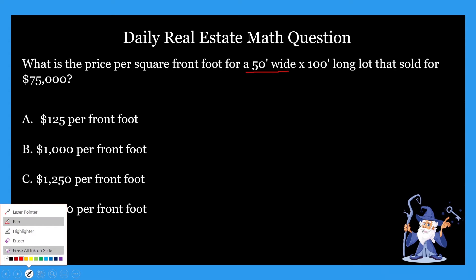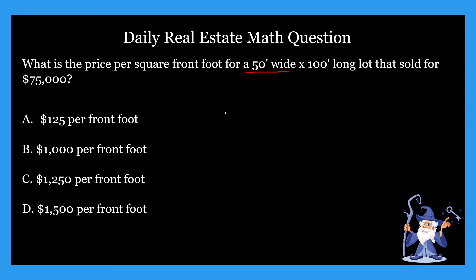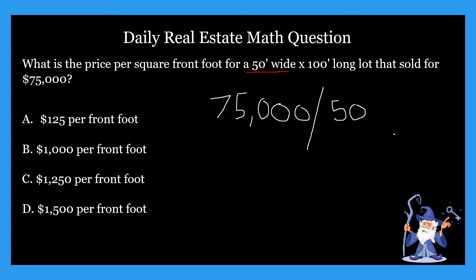So the problem itself is going to look like this: you're going to take $75,000 and divide it by 50. When you do that, it gives you $1,500, which is our answer — D. That's right, it's D.